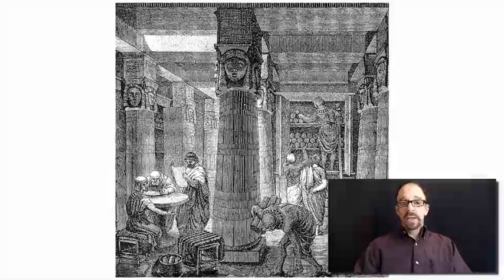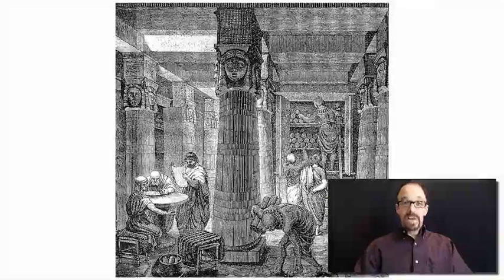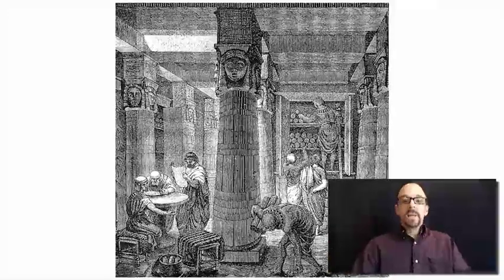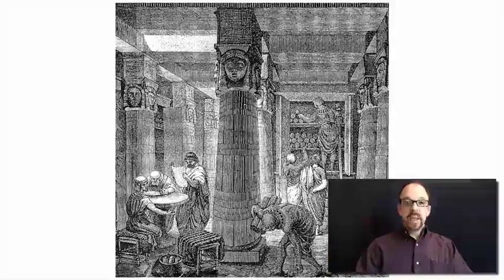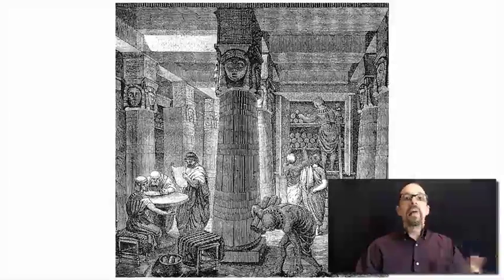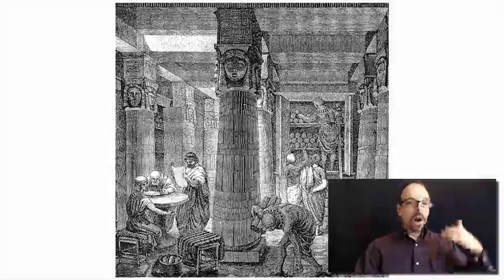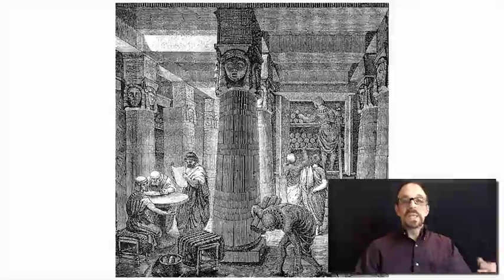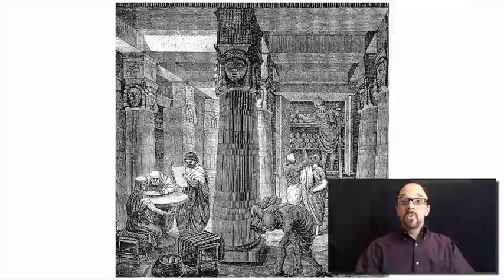By some accounts, the library at Alexandria had half a million scrolls in it. That's a lot. No human being is likely to be able to remember half a million things — where they are, what they're about — so you need some kind of other mechanism.